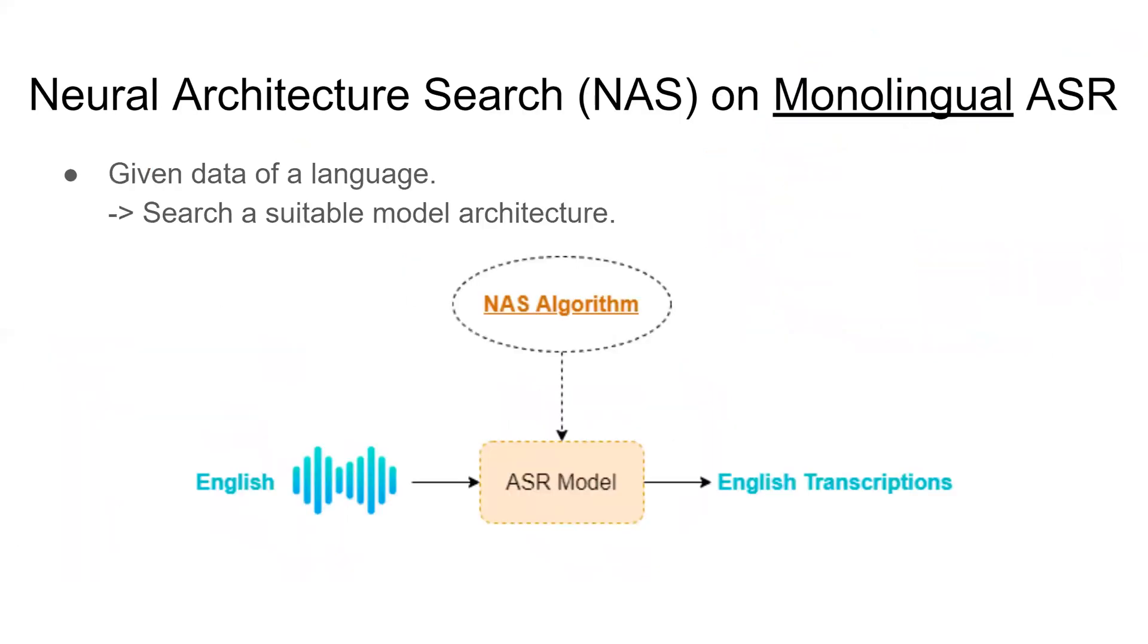However, on the task of speech recognition, there is little attention on neural architecture search. Even the traditional VGG architecture is still used in many ASR models. So in this work, we want to study neural architecture search on ASR models.